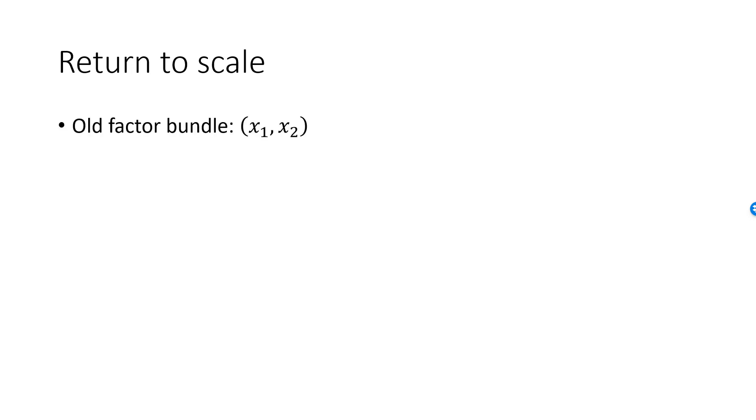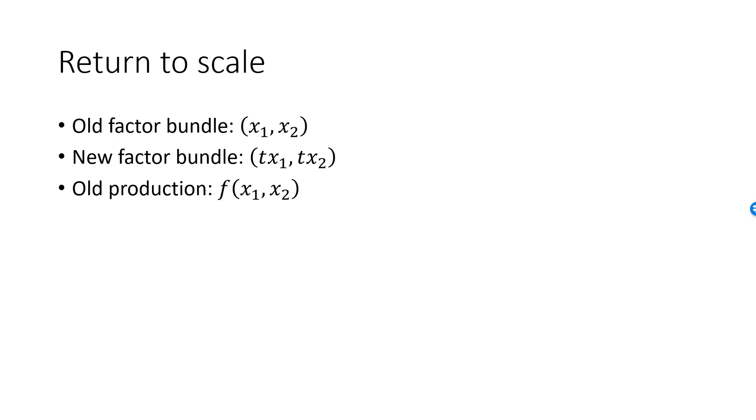First, we do not want to restrict ourselves to the case of precisely doubling each of the production factors. We also want to allow for tripling all factors or cutting them all in half. So let's introduce a variable t, where t equals 2 if we double all factors, and t equals 0.5 if we cut them all in half. We will call x1, x2 our old or initial factor bundle. If we multiply the amount of each production factor by t, we have our new factor bundle. For example, if t is 2, our new bundle is (2x1, 2x2). The old level of production is f of x1, x2 — this is how much we produce with the original bundle.